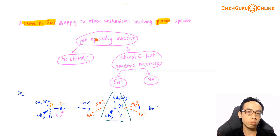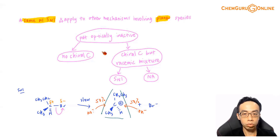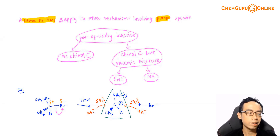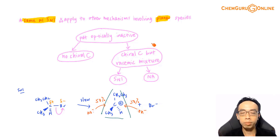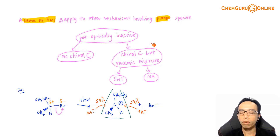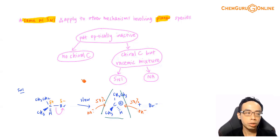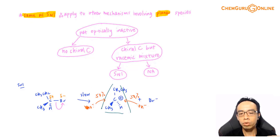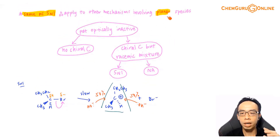We want to apply this to new scenarios. In general, if a product is optically inactive, there are two possible scenarios: the first is no chiral carbon — obvious and not particularly interesting. The second, more interesting case is having a chiral carbon but forming a racemic mixture — an equimolar mixture of both optical isomers — so they cancel each other's optical activity. In this course, we have learned two mechanisms with this outcome: SN1 involving halogenoalkanes and nucleophilic addition involving carbonyl compounds. This should apply to any other scenario involving a planar carbon.